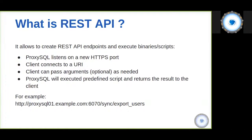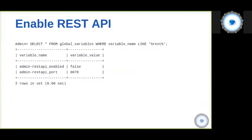Here is an example of how it looks. To enable the REST API, you use global variables. The variable is called admin-rest-api-enabled, which is false by default — you must explicitly set it to true. The default port is 6070, and this can also be configured.